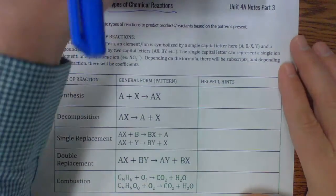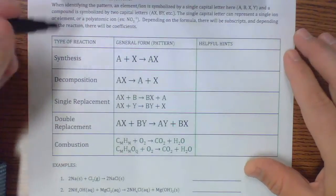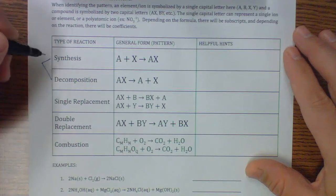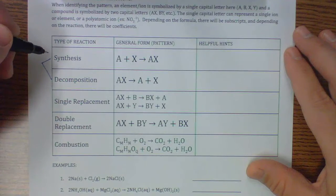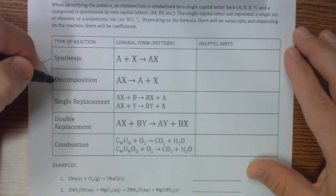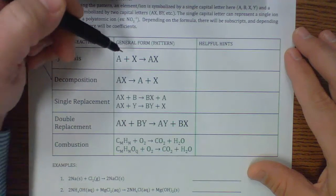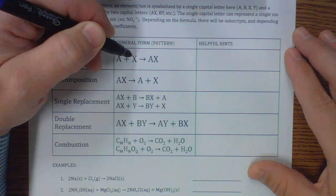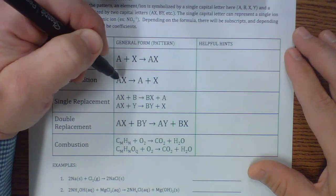I usually like to break these up pattern-wise into two different parts. I like to lump these two together. So this is our synthesis reaction — sometimes it's also called a composition reaction — and this is our decomposition reaction. These are kind of reverses of each other. So if this was element A and this was element X, we would then form AX together, and decomposition would be the reverse of that.